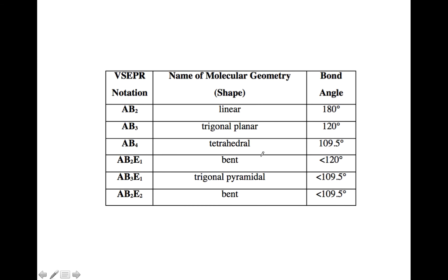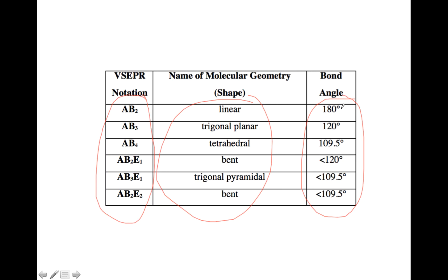This last slide shows a table that summarizes everything we just talked about. You can see the VSEPR notation — draw the Lewis structure, count the number of outer atoms bonded to the center and the number of lone pairs, then find it on this chart. Remember, it doesn't matter whether they're single or double bonds to the outer atoms — you just count it as one outer atom. Then you can get the name of the shape and the bond angle from the table. Remember that molecules with lone pairs will have a bond angle a little less than expected because lone pairs have that extra repulsive effect.